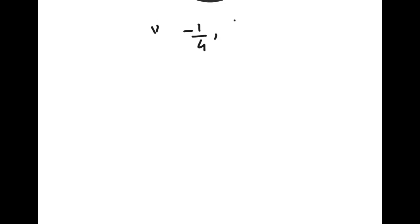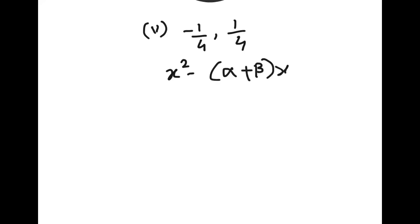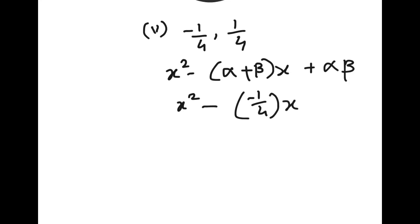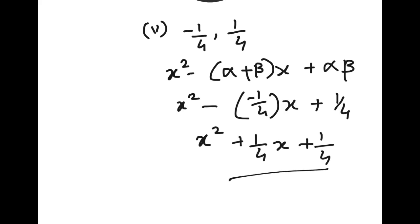The fifth question: sum of zeros is -1/4 and product of zeros is 1/4. Substituting into x² - (α+β)x + αβ: x² - (-1/4)x + 1/4, which becomes x² + (1/4)x + 1/4.